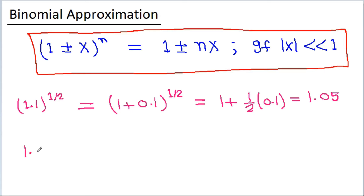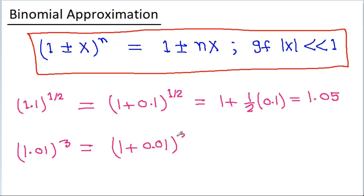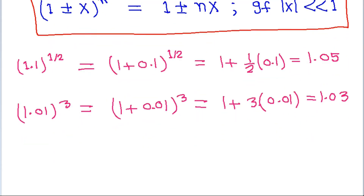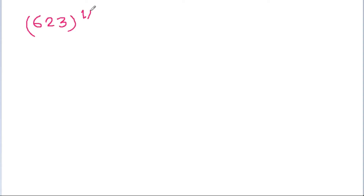If we have to find the value of (1.01)^3, it will be (1 + 0.01)^3, or 1 + 3 × 0.01, which equals 1.03.